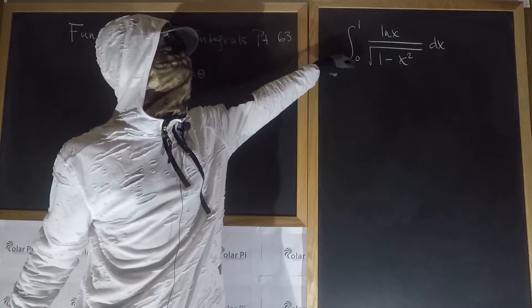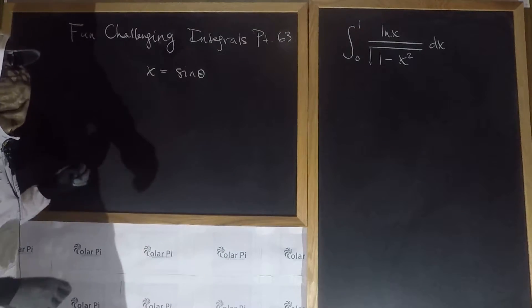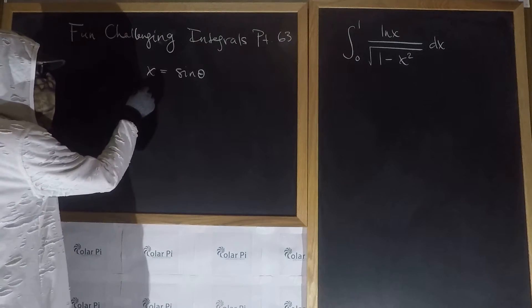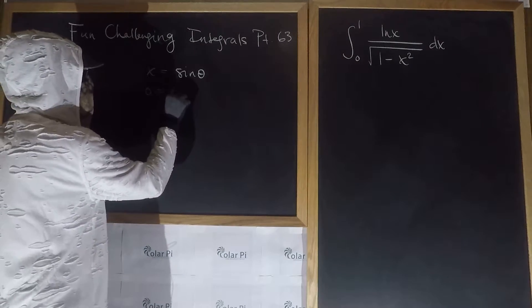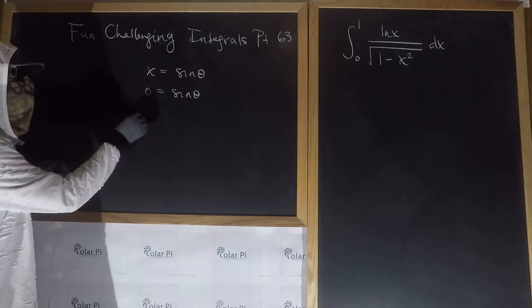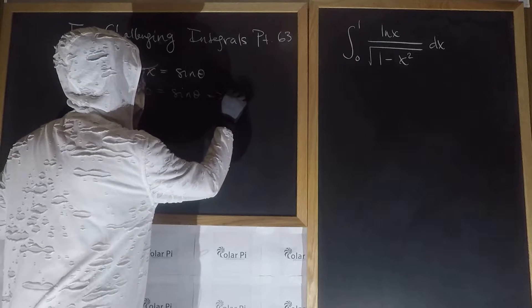Then, first, let's take care of the limits of integration. So, zero here would mean, since zero is about x, that we have zero equals sine theta, which implies that theta equals zero.